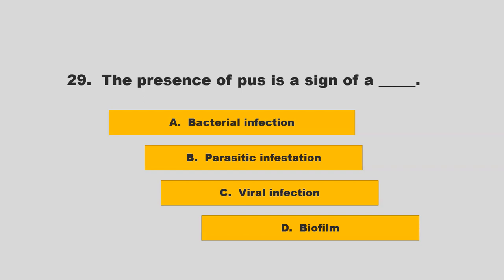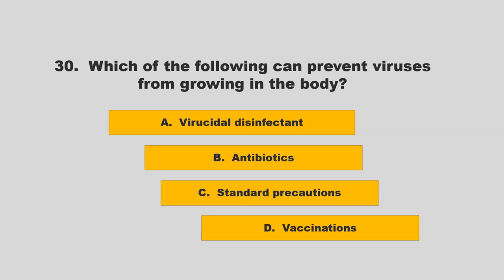The presence of pus is a sign of a blank. Options: bacterial infection, parasitic infestation, viral infection, or biofilm. The correct answer is A: bacterial infection.